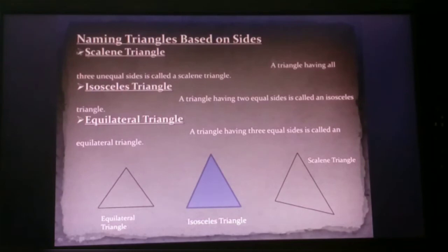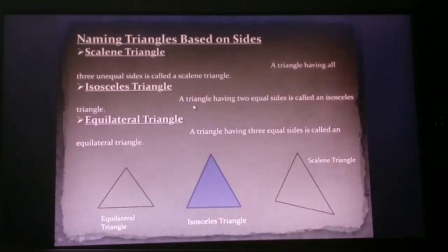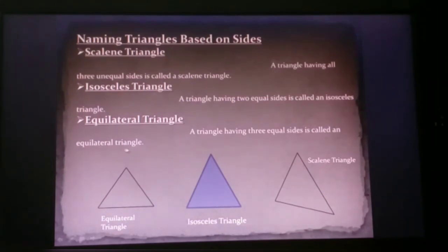Now naming a triangle based on sides. A scalene triangle has all three unequal sides. An isosceles triangle has two equal sides. An equilateral triangle has three equal sides. The figure shows equilateral triangle, isosceles triangle, and scalene triangle.